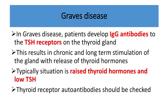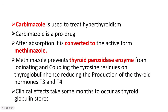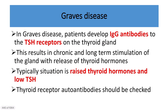First, let's look at Graves' disease. In Graves' disease, the patient develops IgG antibodies against the TSH receptor on the thyroid gland. These IgG antibodies against the TSH receptor cause chronic and long-term stimulation of the gland to release thyroid hormone.